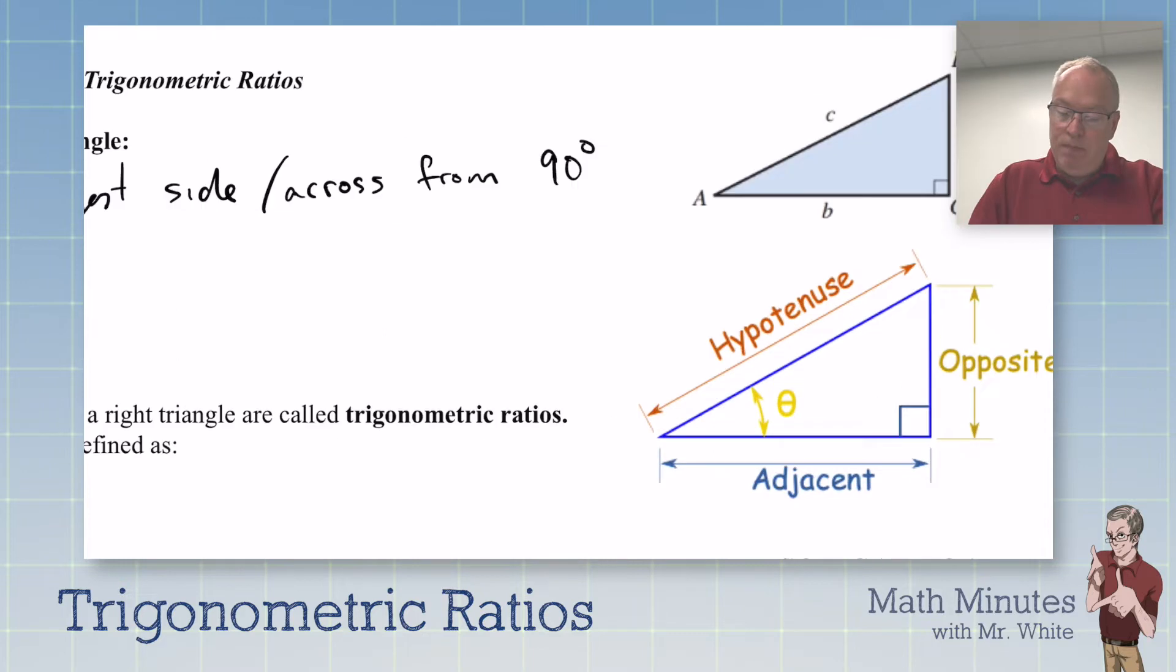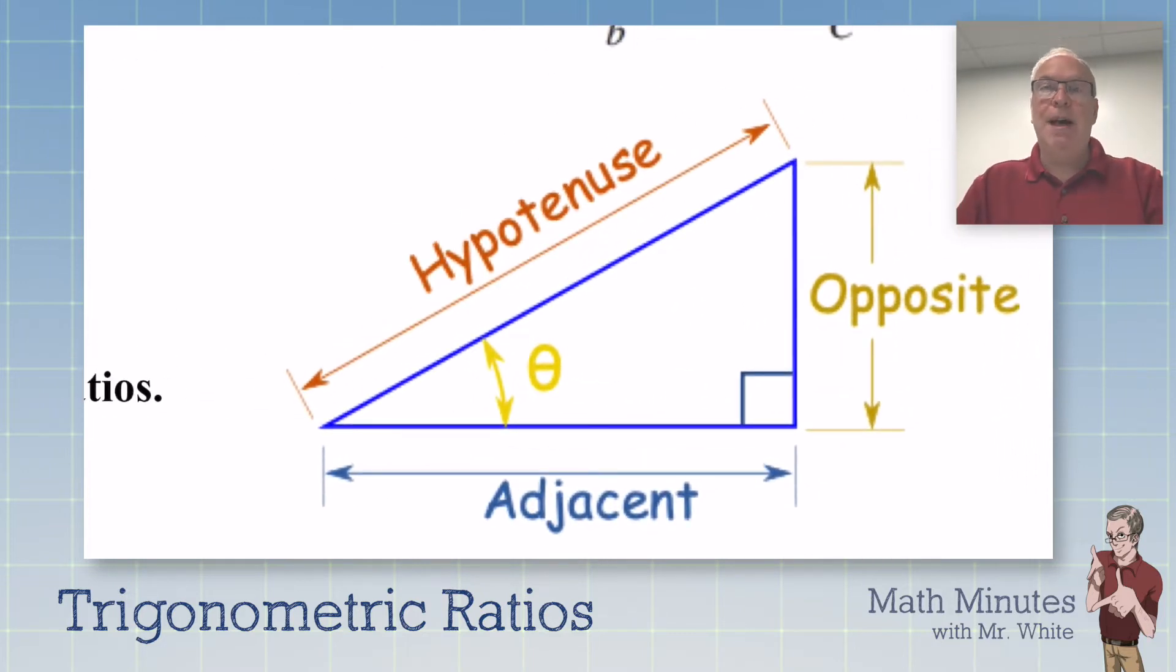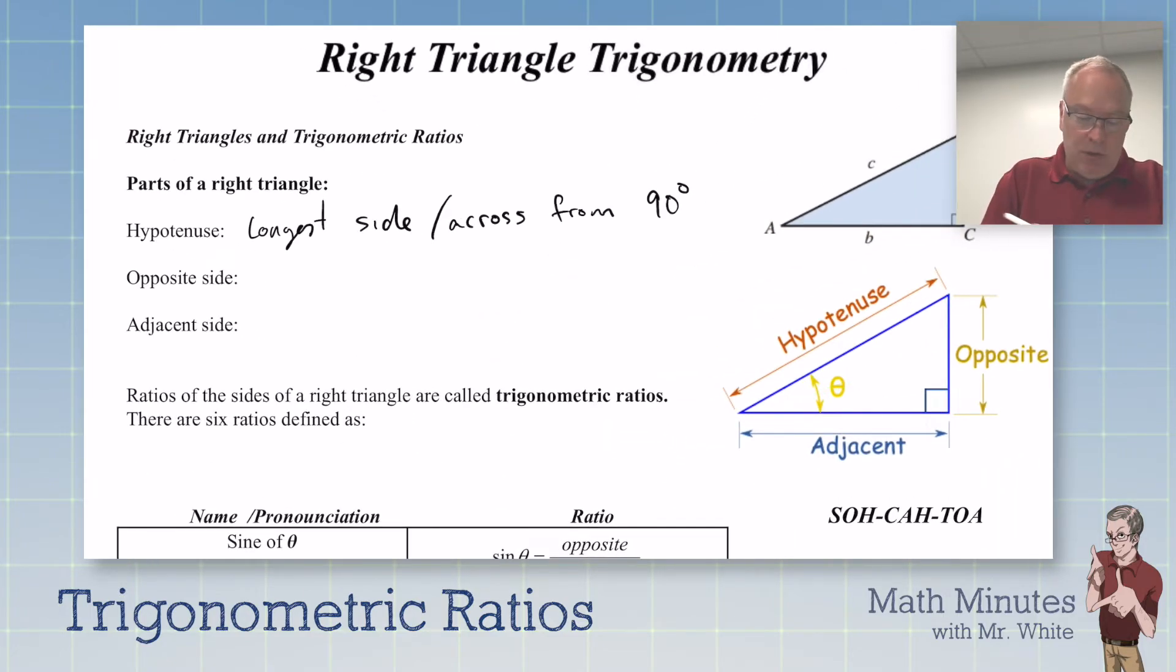I'm not going to be using the word 'across from' a lot in this section. Instead, I'm going to use the word opposite. Opposite means across from the specific angle. This theta is a Greek symbol, theta, and it usually is used for angles. So we would say this side is opposite angle theta. The opposite side would be across from an angle. For example, A is opposite angle A.